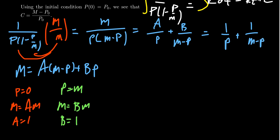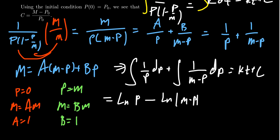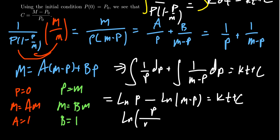Returning to the integral, we now integrate one over p dp plus the integral of one over m minus p dp, and this equals kt plus a constant. The first integral gives the natural log of p — ignoring absolute value since population is positive. The second gives minus the natural log of m minus p, since m minus p is positive. This equals kt plus c. Combining the logarithms, we get the natural log of p over m minus p equals kt plus c.